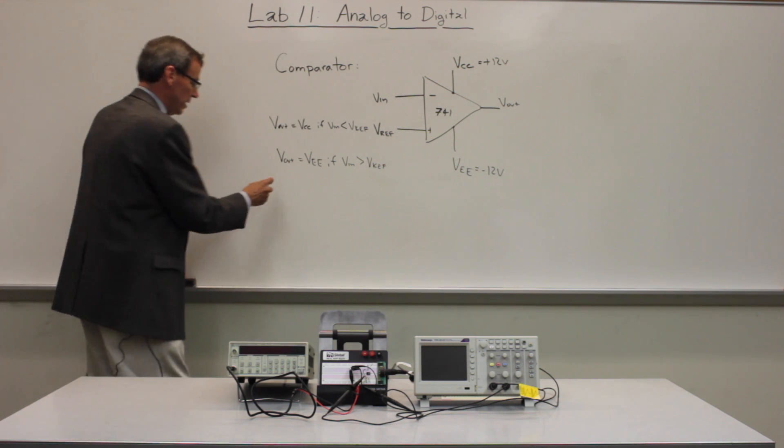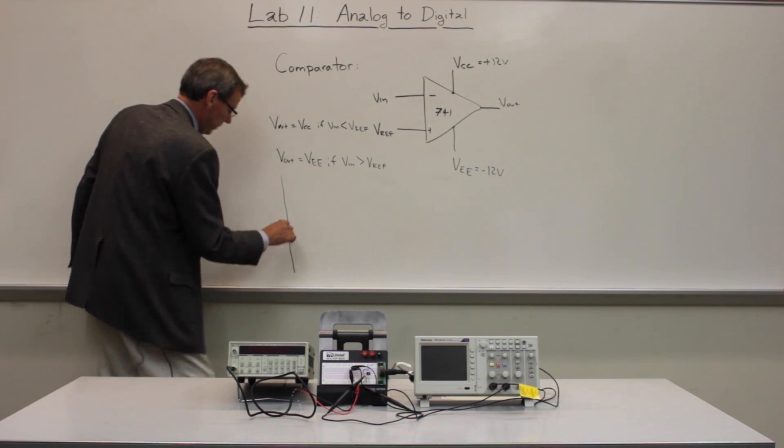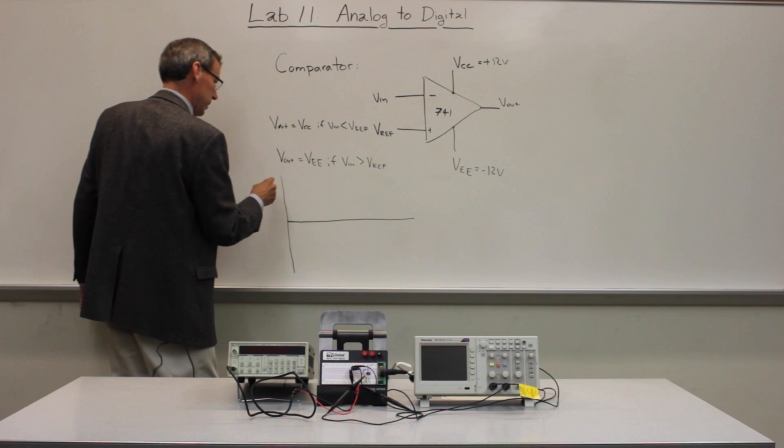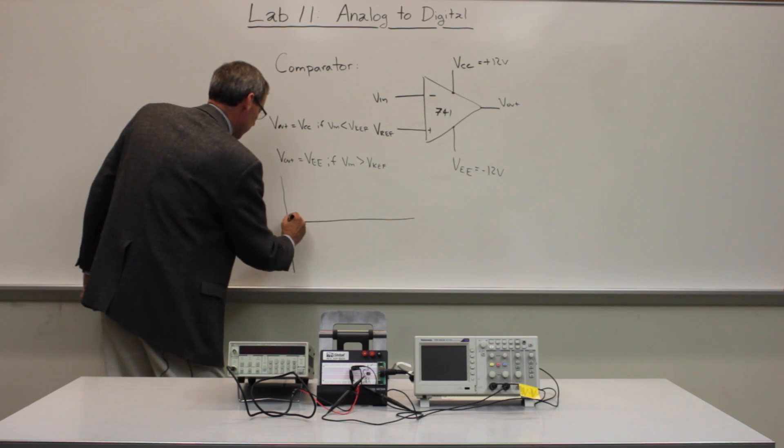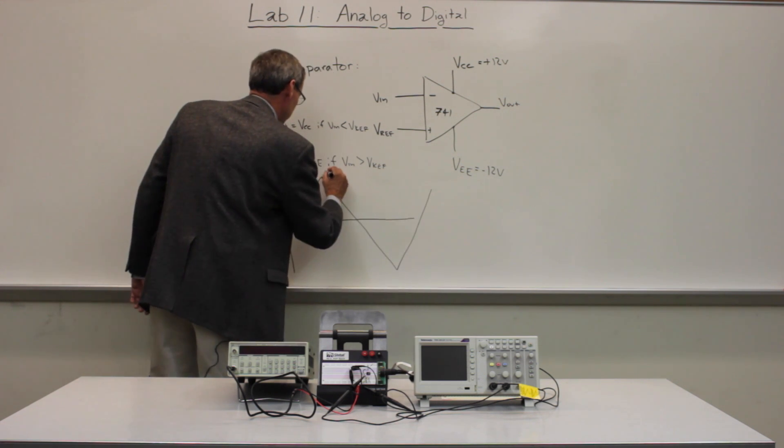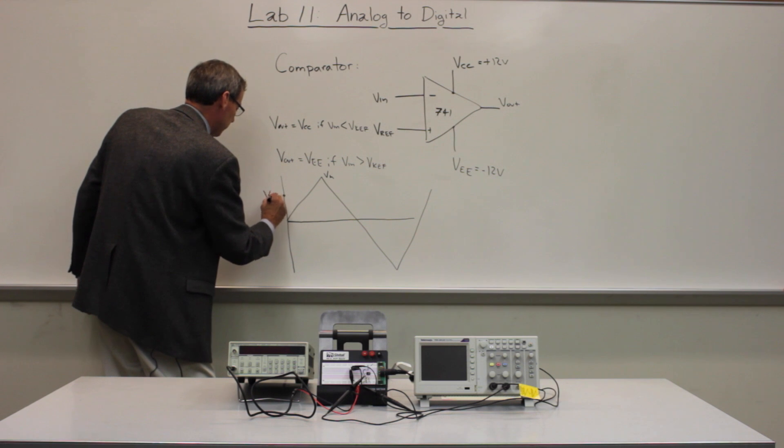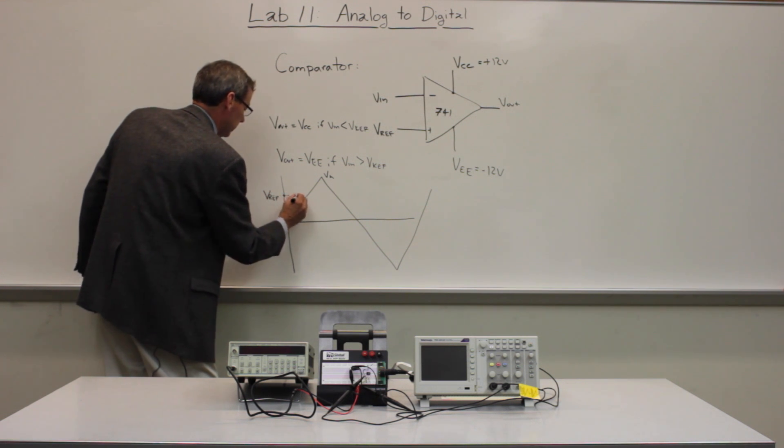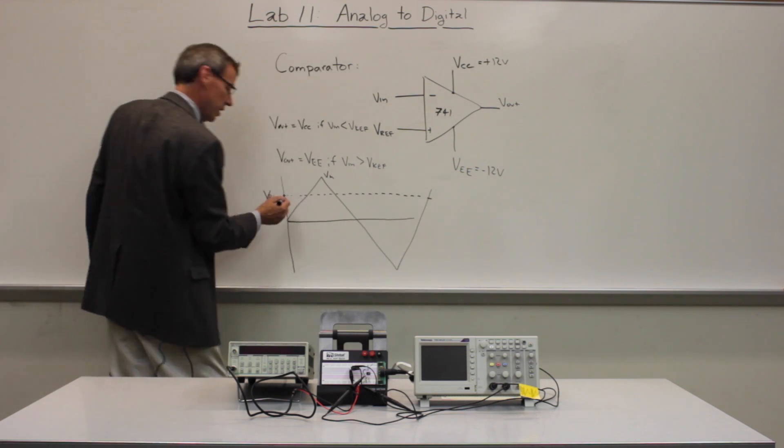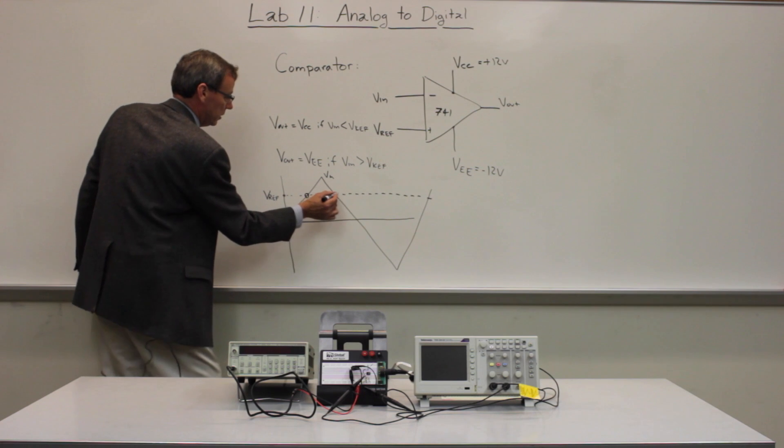So if we look at this on a plot, basically draw, let me put some triangle wave input in here. So there's VN. Let's say this is our reference voltage. This is across here.